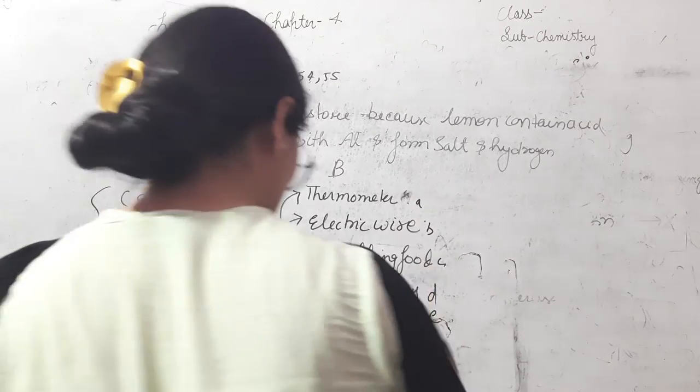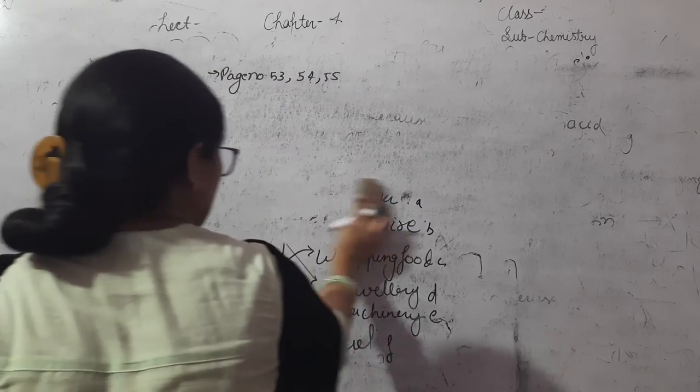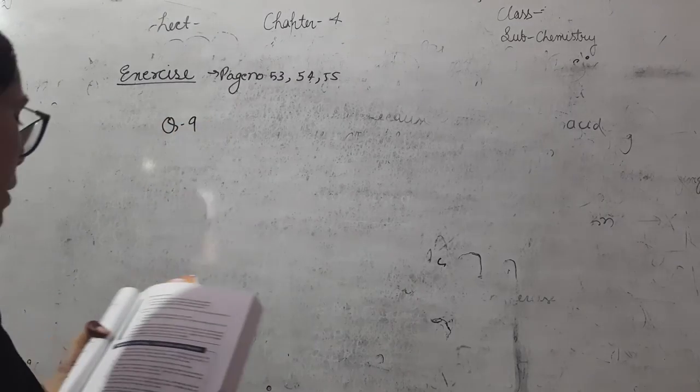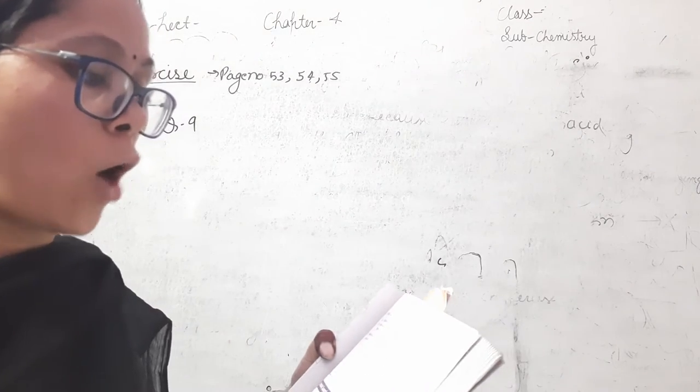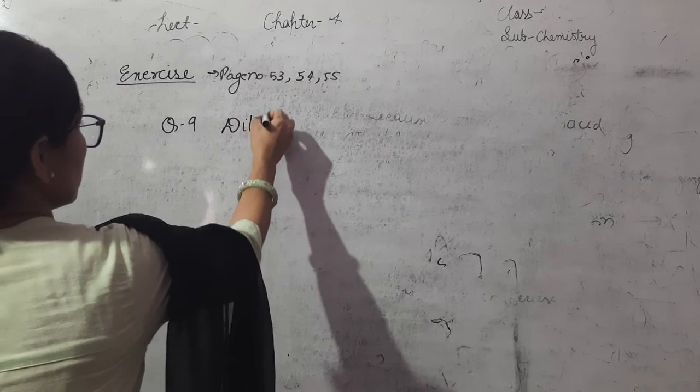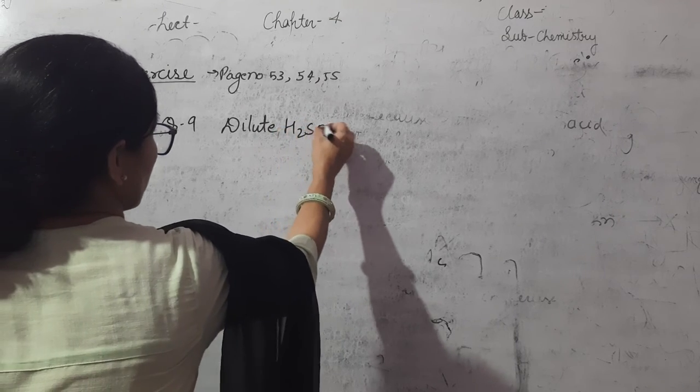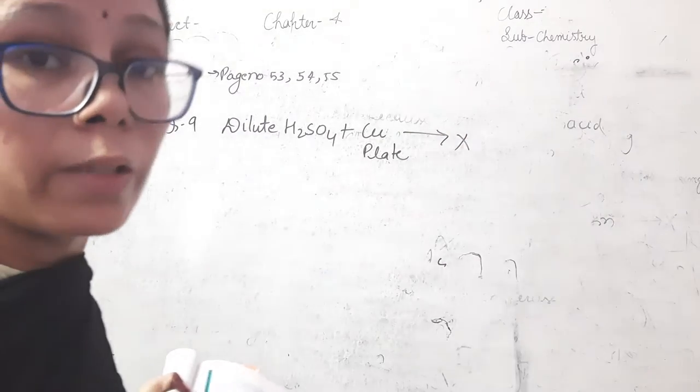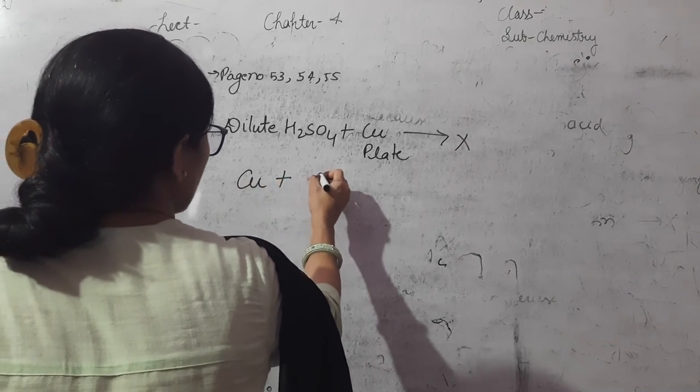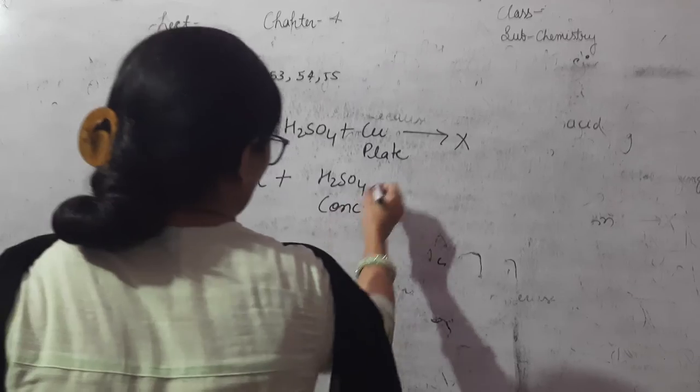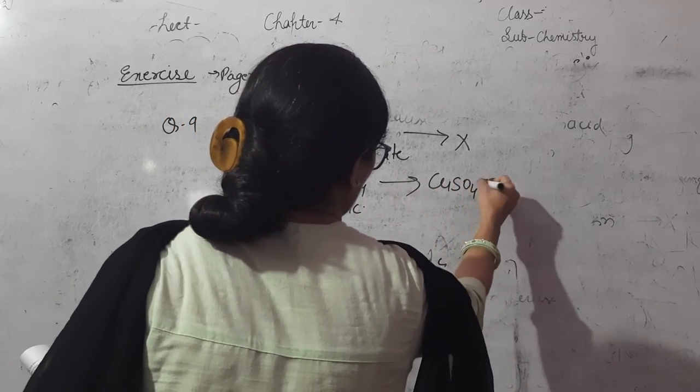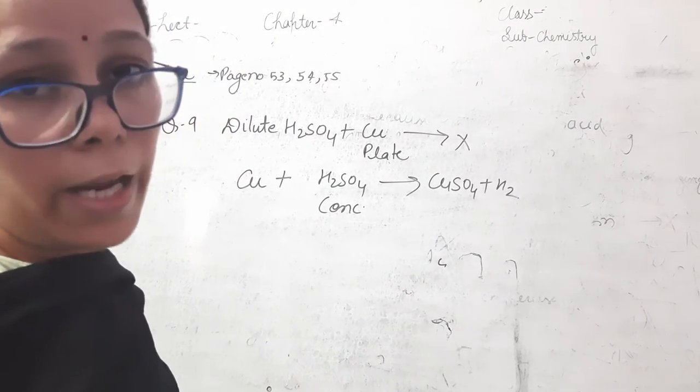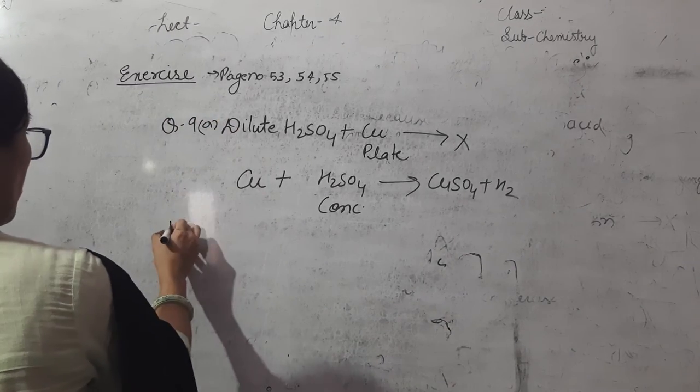Question number 9. Dilute sulfuric acid H2SO4 poured on copper plate. Reaction is not happened. Copper does not react with dilute sulfuric acid. Copper reacts with concentrated sulfuric acid, which is highly reactive and forms copper sulfate and releases hydrogen gas. So if we pour dilute sulfuric acid on copper plate, reaction is not happened.